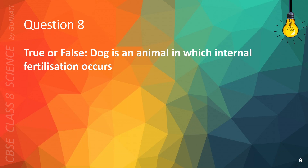Question 8. True or false: Dog is an animal in which internal fertilization occurs. The correct answer is A. True.